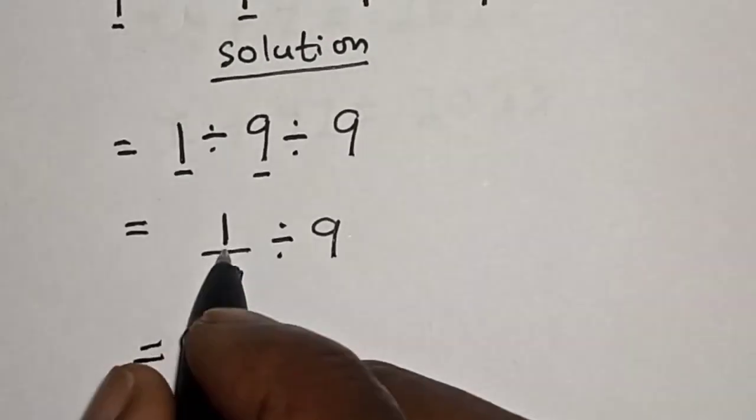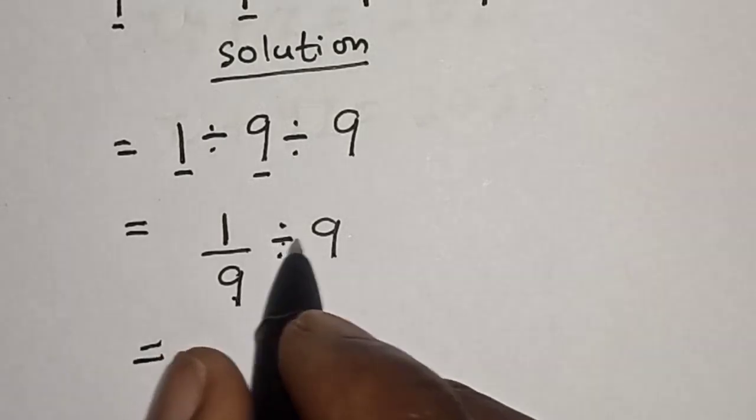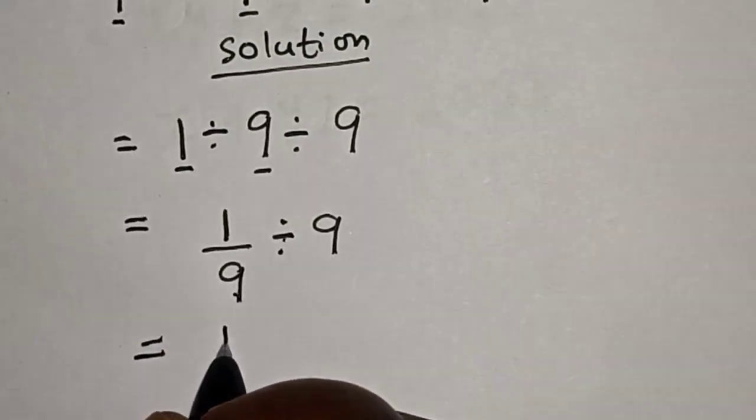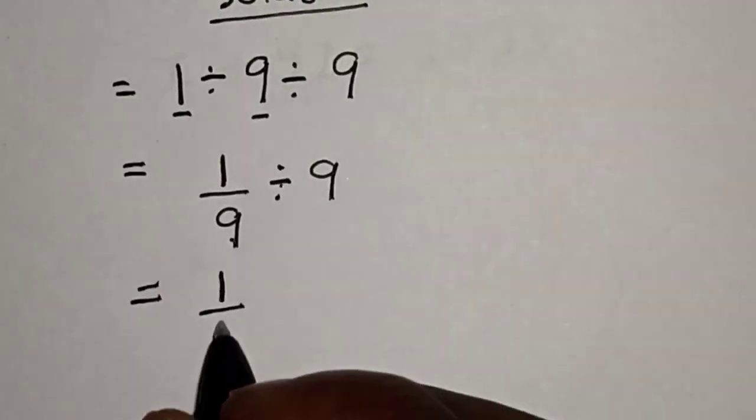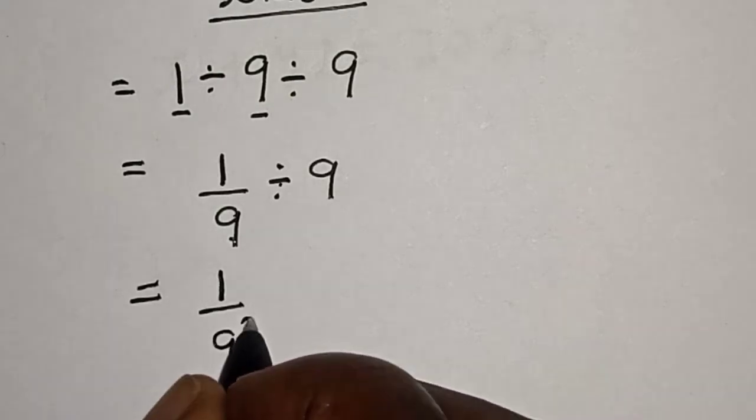Then, this is equal to 1 divided by 9, divided by 9. This is 1 over 9 squared.